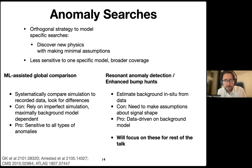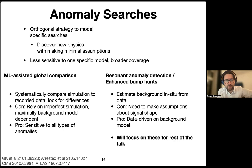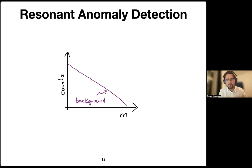The alternative direction: we make the assumption that we have a signal that is resonant in at least one feature, and then we estimate backgrounds not from first-principle simulation but using in-situ background estimation from data — essentially constructing a bump hunt. The downside is we start making assumptions about the signal shape, but the big advantage is being completely data-driven, which avoids dependence on simulation quality.